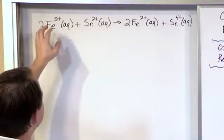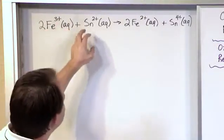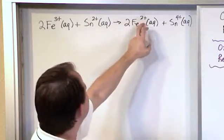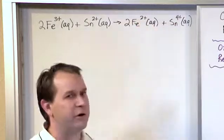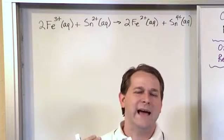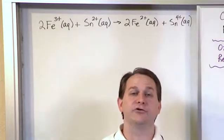So when we see a reaction like this, 2 iron ions and then tin ions and then iron ions with a different charge and tin ions with a different charge, what we're showing here is this is what's really actually participating in the electron transfer,